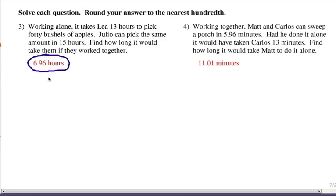Let's do the first fraction representing Leah. One over how long it takes her to do that job herself, that would be 1 over 13. We're going to add to that 1 over the part that Julio can do, and that would be 15 hours doing it by himself. But if we want them to work together, we add those fractions together and we're going to get 1 over x to represent their total time to do it together.